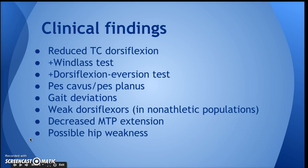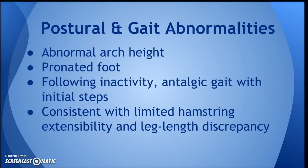Clinical findings: clinically, we will find reduced talocrural dorsiflexion, a positive windlass test, a positive dorsiflexion eversion test, pes cavus or pes planus foot posture, gait deviations, weak dorsiflexors especially in non-athletic populations, decreased MTP extension, or ipsilateral hip weakness. Some of the postural and gait abnormalities that present with this condition include abnormal arch height and a pronated foot.